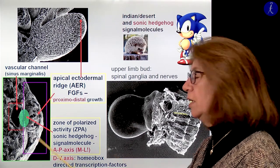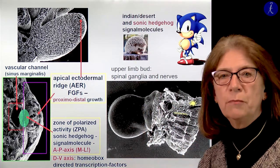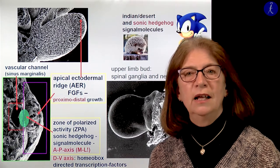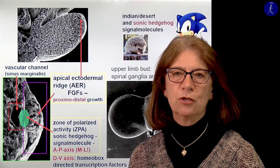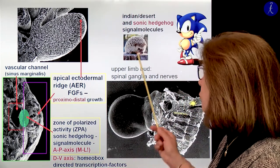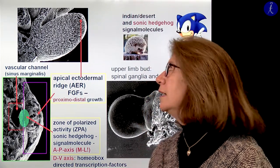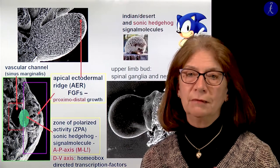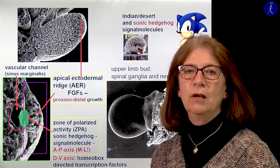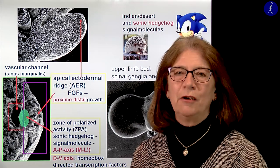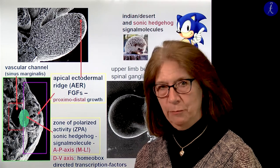Because of this 90-degree rotation, the Sonic Hedgehog signal molecule will actually determine the medial-lateral axis. The dorsal-ventral axis is defined by homeobox-derived transcription factors. Where does the funny name Sonic Hedgehog come from? Researchers found a certain factor and named it Indian Hedgehog, then found another similar one called Desert Hedgehog, and when they found the third one they only had the cartoon figure Sonic Hedgehog, so they named it after that. This factor became most famous of all and you will hear about it with nervous system and facial development.